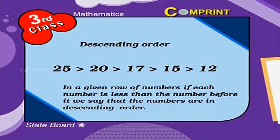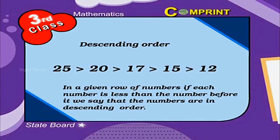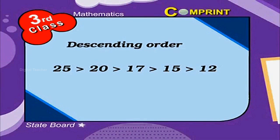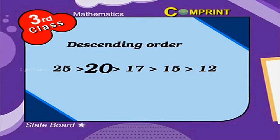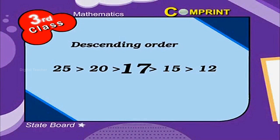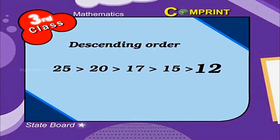Descending order: in a given row of numbers, if each number is less than the number before it, we say that the numbers are in descending order. For the above example, the descending order is 25, 20, 17, 15, and 12.